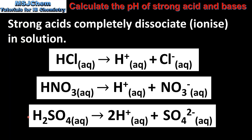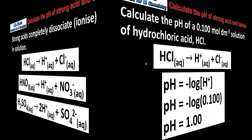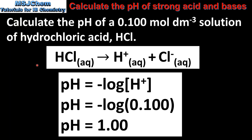Next we look at how to calculate the pH of these acids. Our first example is to calculate the pH of a 0.1 mole per decimeter cubed solution of hydrochloric acid. Because hydrochloric acid is a strong monoprotic acid, a 0.1 mol dm⁻³ solution will contain 0.1 mol dm⁻³ of hydrogen ions.